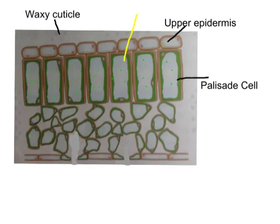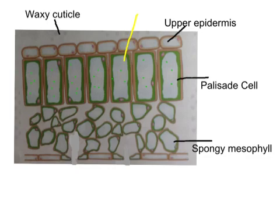Approaching the bottom half of the leaf, we find irregularly shaped, interspersed cells with gaps between them — these are called the spongy mesophyll cells. They are specialised by being irregular in size and shape, so they don't fit together perfectly. This leaves air gaps running all the way through, giving them that spongy texture — which is why they're called the spongy mesophyll layer.